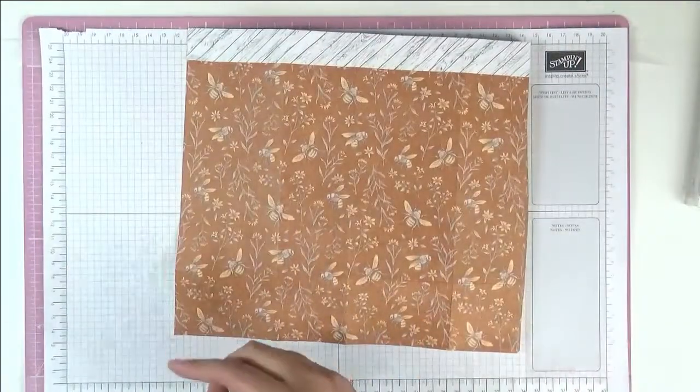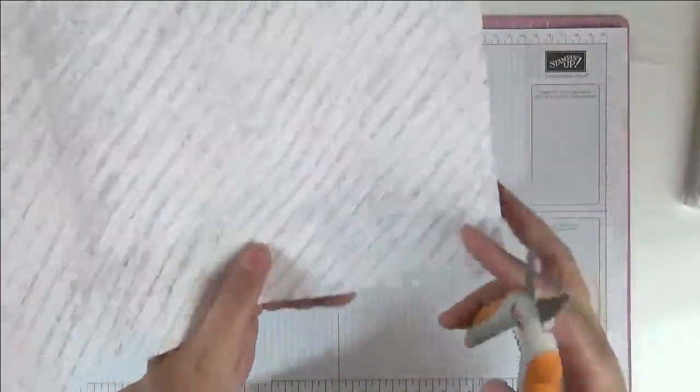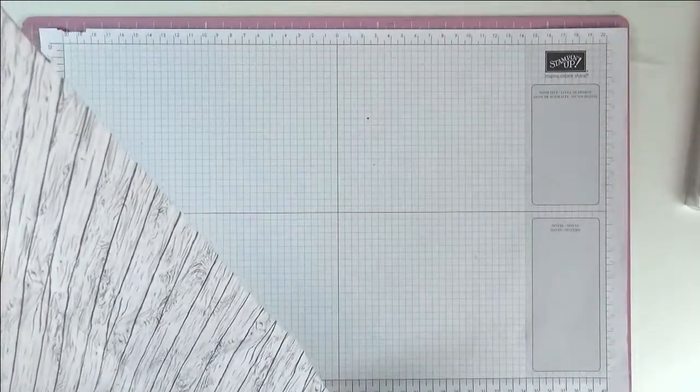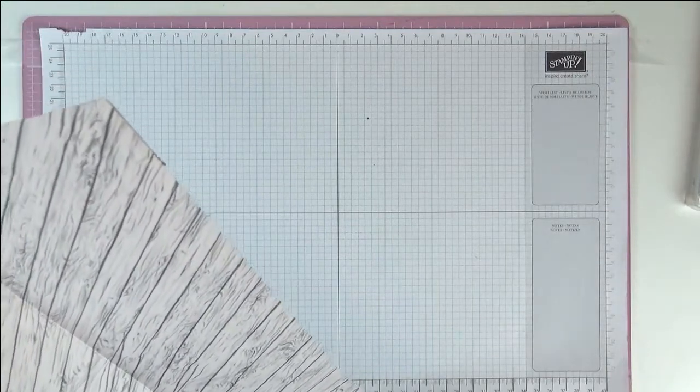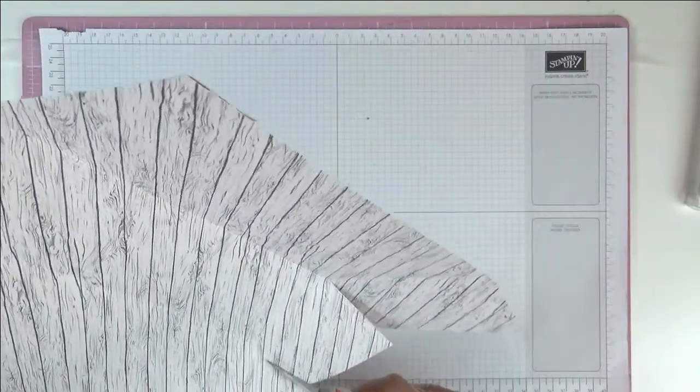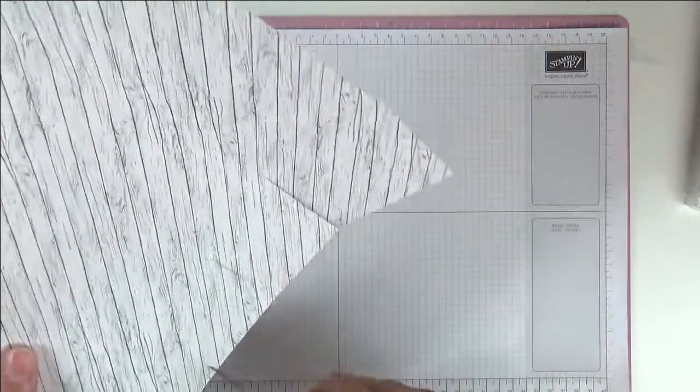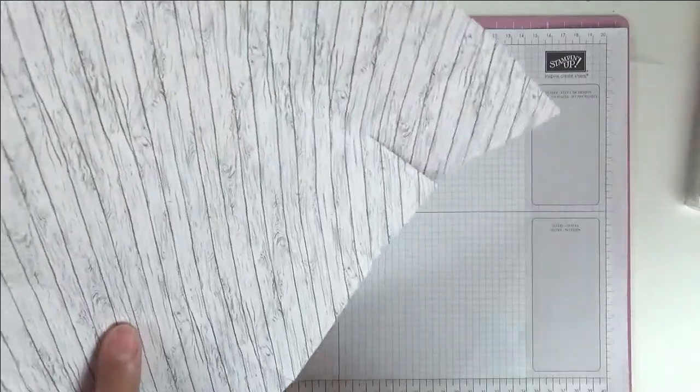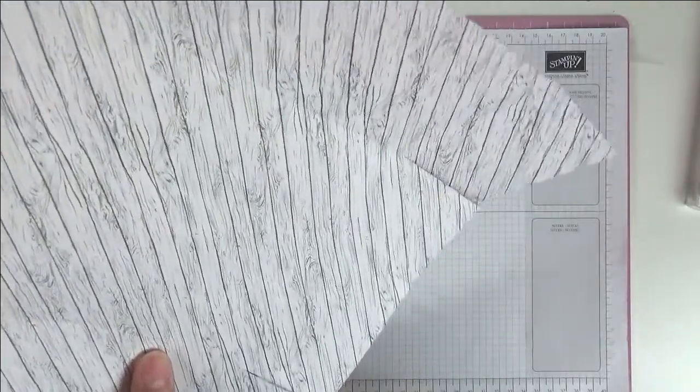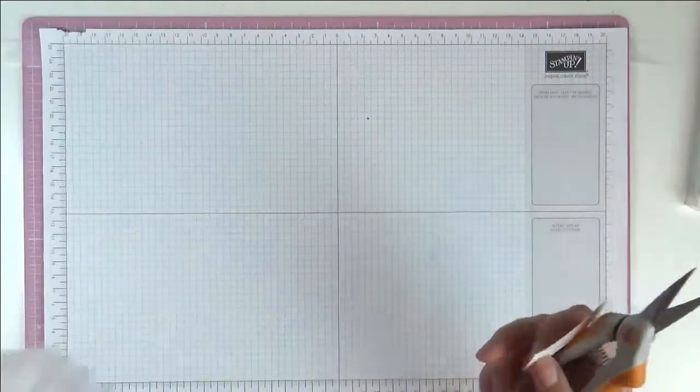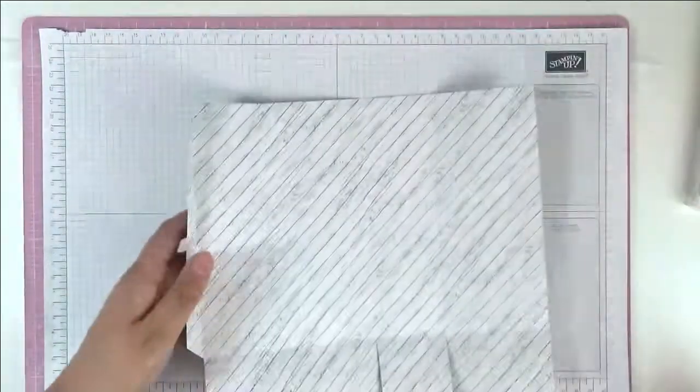Okay, so now we're gonna cut our tabs. So we're gonna cut along the score line here up to that score line on the bottom where we've got the two inch score line. Cut up, and we're just cutting along the score line up to the score line. And then at the end where you've got this little tab, you're gonna cut that away just at an angle, like that, if that makes sense.